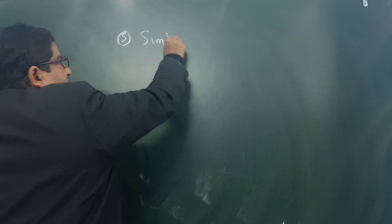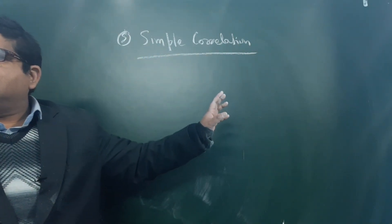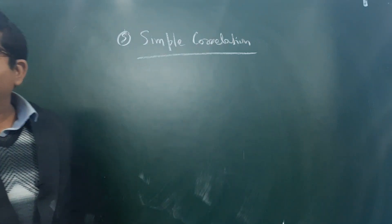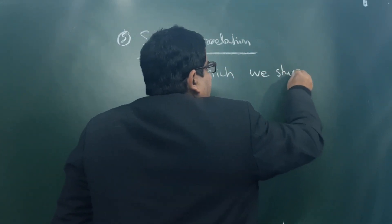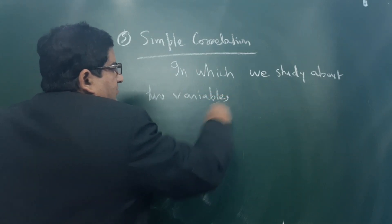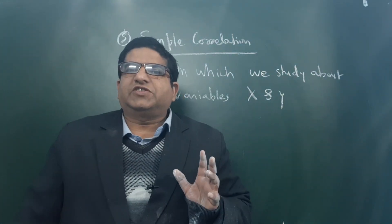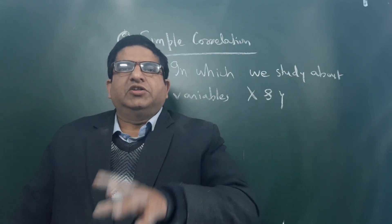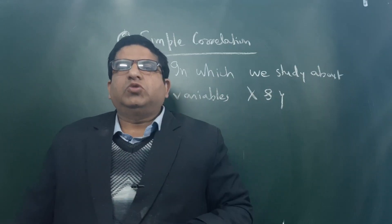The fifth type is simple correlation. Simple correlation is when we study about only two variables — x and y. For example, the radius and circumference of a circle, or the study of husband and wife, or boys and girls in a school. When we study only two variables x and y, we call it simple correlation.